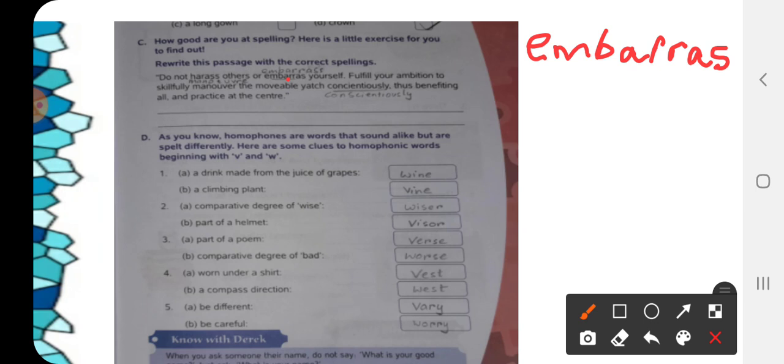Number next one. Let's again read the sentence. Fulfill your ambition to skillfully maneuver the movable yacht conscientiously. The spelling first we are going to correct is of maneuver.